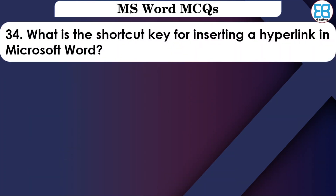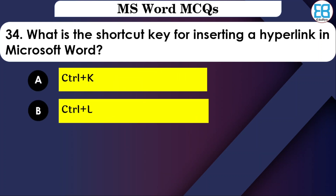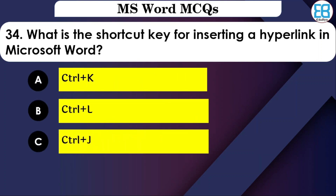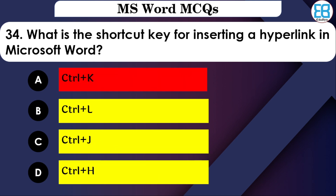What is the shortcut key for inserting a hyperlink in MS Word? The options are: Ctrl+K, Ctrl+L, or Ctrl+J. The correct option is Ctrl+K — use Ctrl+K to insert a hyperlink.